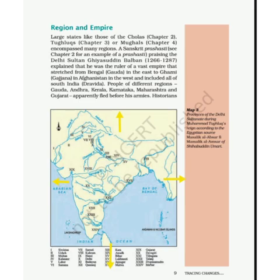The Nicobar Islands on one side, the Lakshadweep Islands on the other side, and the Bay of Bengal. When we talk about the map, we should always pay attention to the directions, as I have tried to show with the yellow arrow.